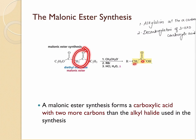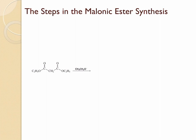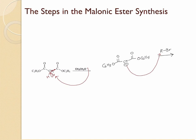Let's see the steps involved in malonic ester synthesis. First, we abstract the alpha hydrogen — there are two hydrogens here, and one will be abstracted by the base, thrusting electrons onto carbon to form an enolate ion. In the next step, this enolate ion reacts with the alkyl halide, making a nucleophilic attack on the electrophilic carbon of the alkyl halide, thrusting electrons onto Br, the leaving group, thereby forming an alpha-substituted malonic ester.